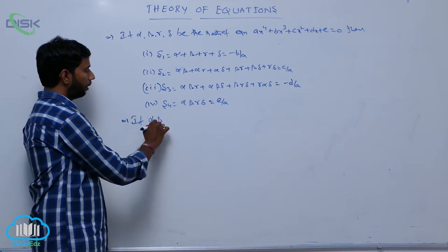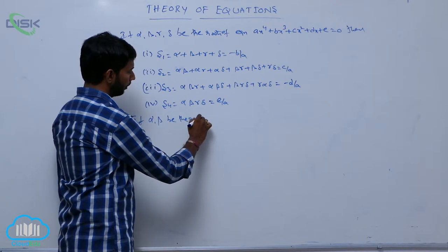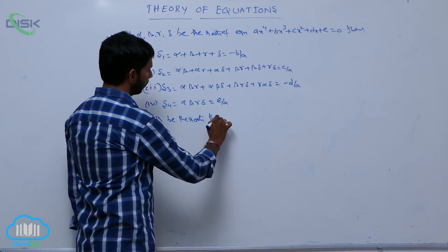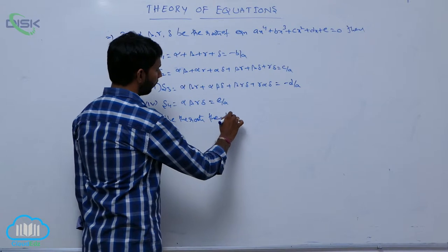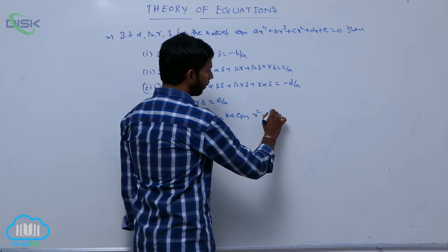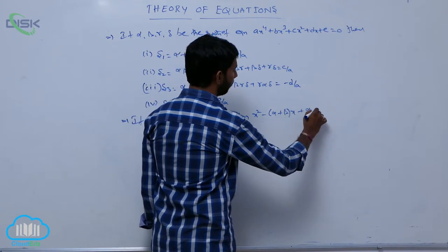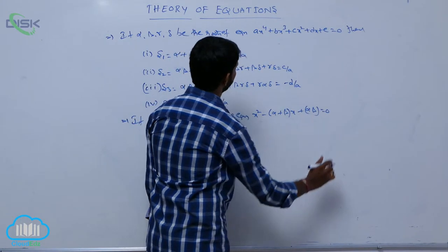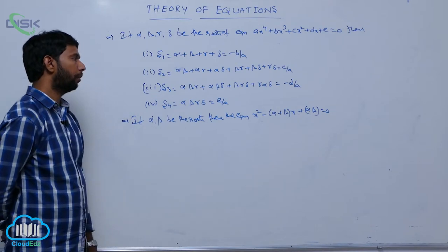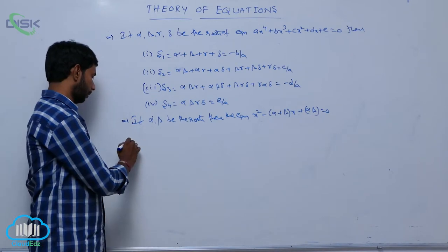If alpha and beta are the roots of a quadratic equation, then the equation is x² minus (alpha + beta)x + alpha·beta = 0.